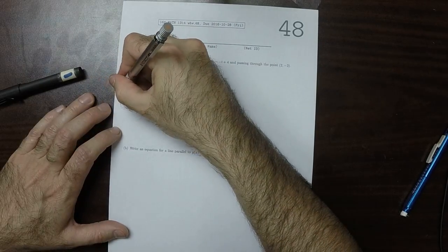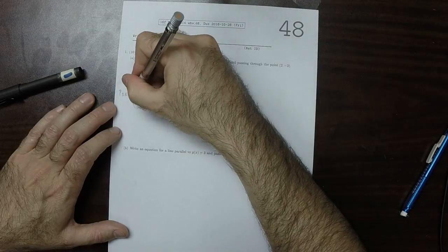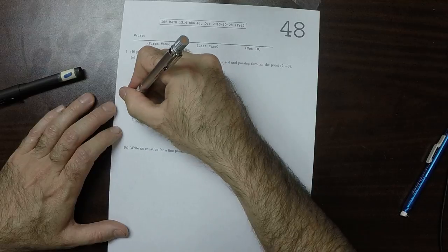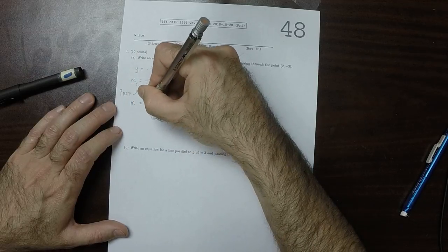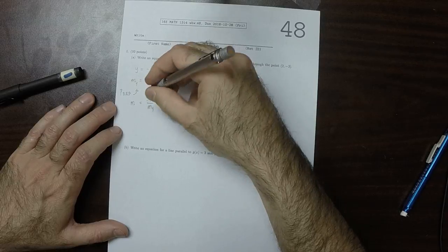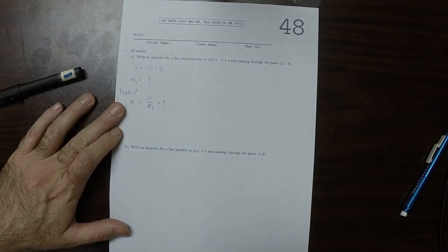The perpendicular slope is what we want. So the slope perpendicular to m1 is m equal to negative 1 over m1, which is 1. So the slope of the line that we're looking for has slope 1.